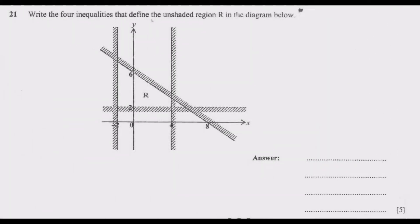Write the four inequalities that define the unshaded region R in the diagram below. This is a common question and normally this is usually question 21. Once you understand the inequalities, this should be an easier question for you to answer.